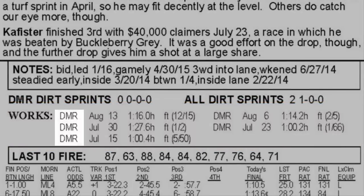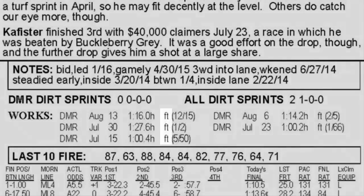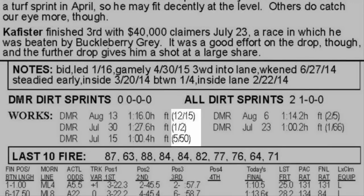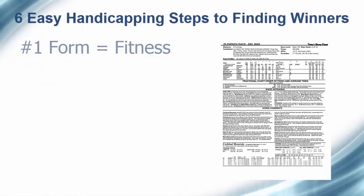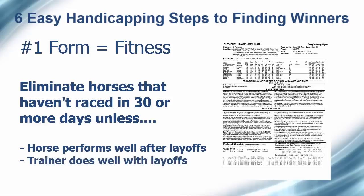The workout information includes the track, the date, the time of the work, the condition of the surface, and how the work ranked relative to other times recorded that day. You will also want to eliminate any horses that haven't raced in 30 or more days, unless the horse or trainer has a history of performing well coming off layoffs, or the horse has had a number of workouts that suggest the horse is fit from a condition standpoint.